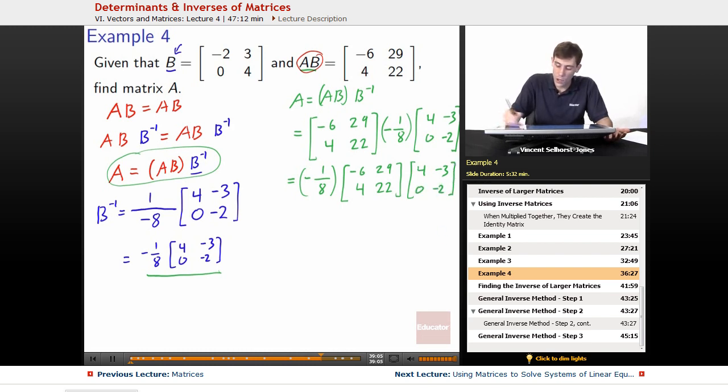Okay, so still that fraction up at the front, -1/8 times whatever comes out of this. So, it'll come out to be a 2 by 2. -6, 29, times 4, 0. -6 times 4 gets us -24.